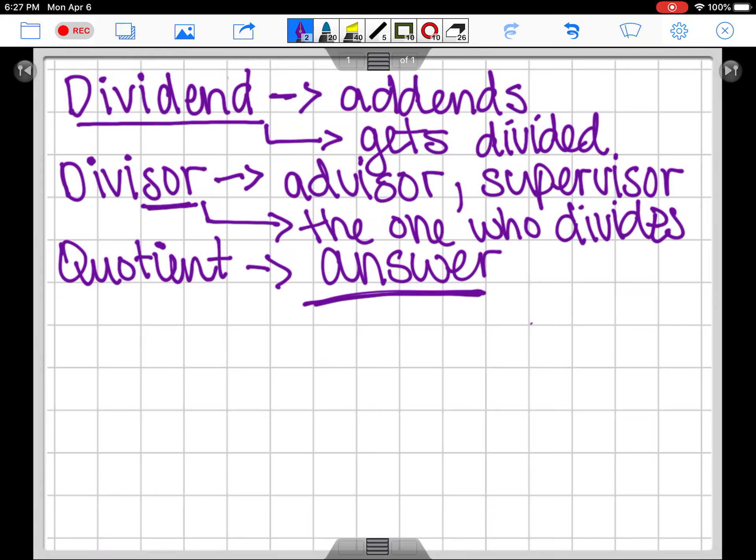But I'll often add descriptors to the quotient. I may say we're going to use a decimal quotient. Maybe we're going to be using a whole number quotient. Or I might say that the quotient will be a mixed number.